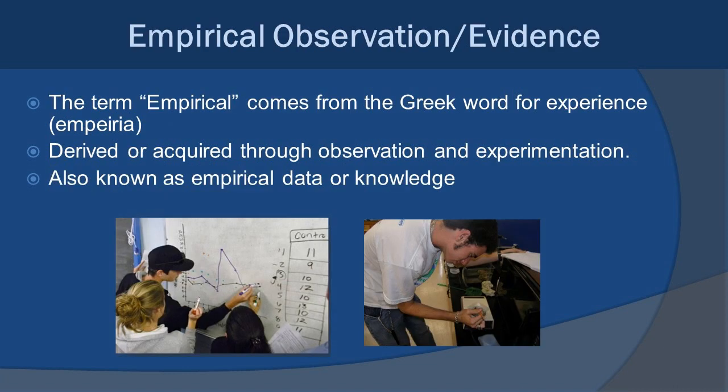Now, I've been mentioning this thing called empirical data for most of this talk. The term empirical comes from the Greek word for experience, empiria. And it's derived or acquired through observation and experimentation. This is important because you're going to be dealing with a lot of data, empirical data or knowledge, throughout this course.